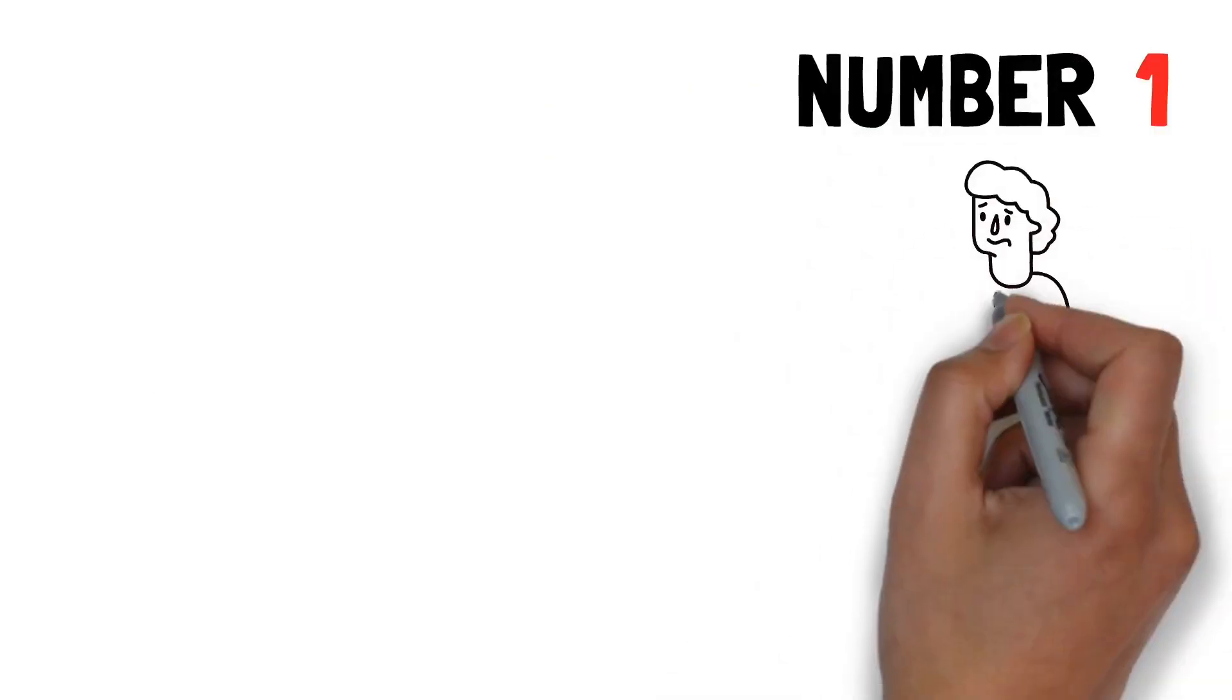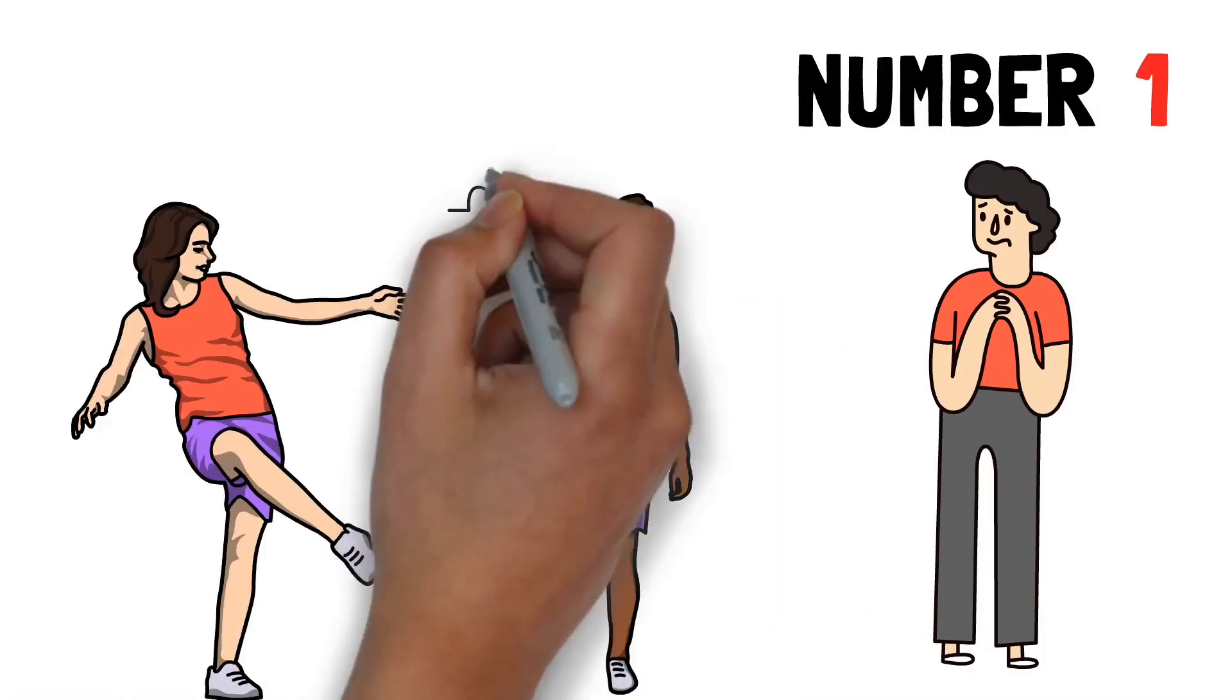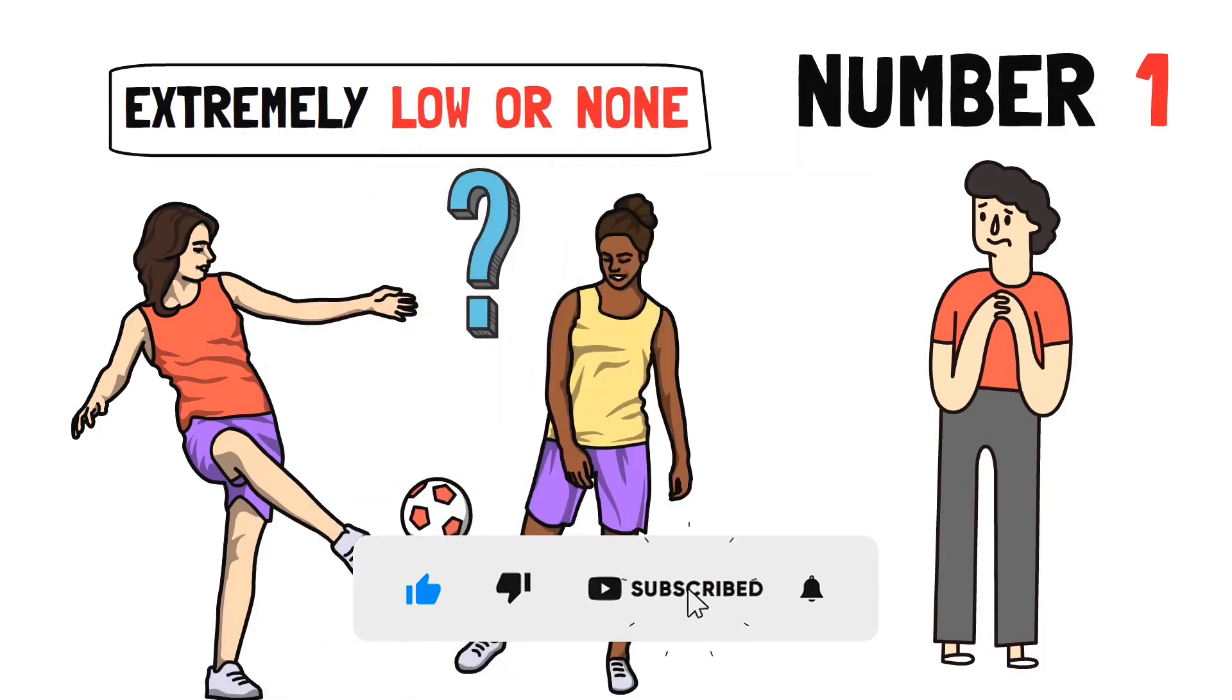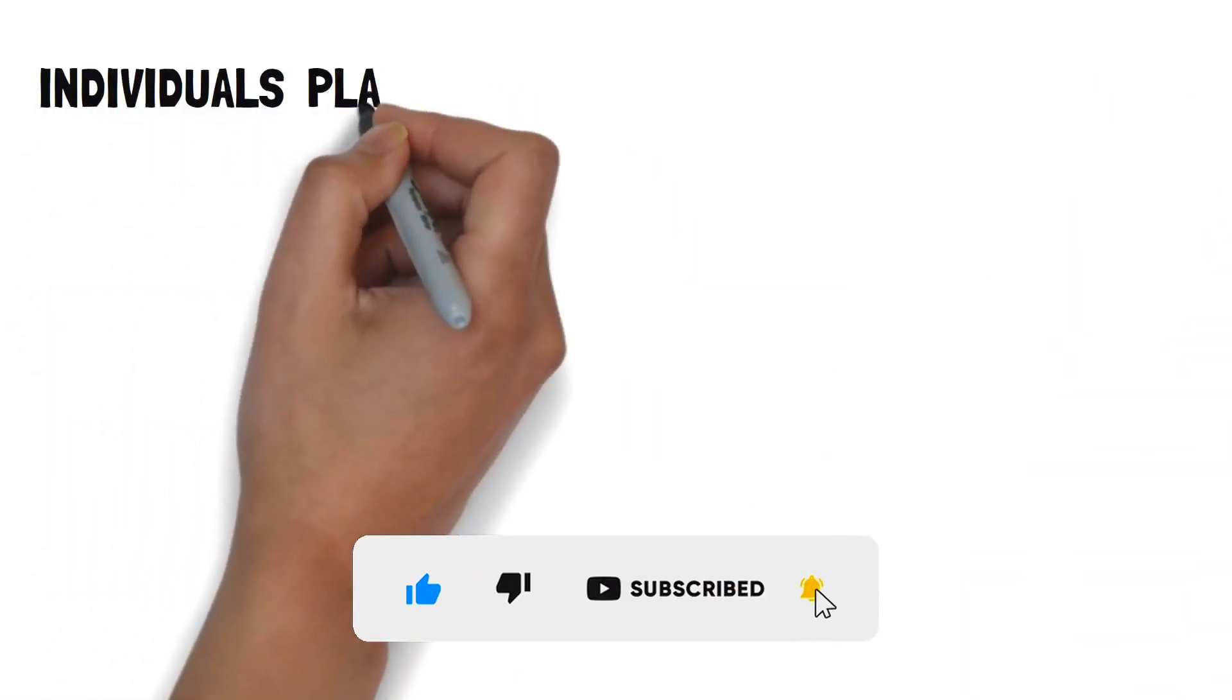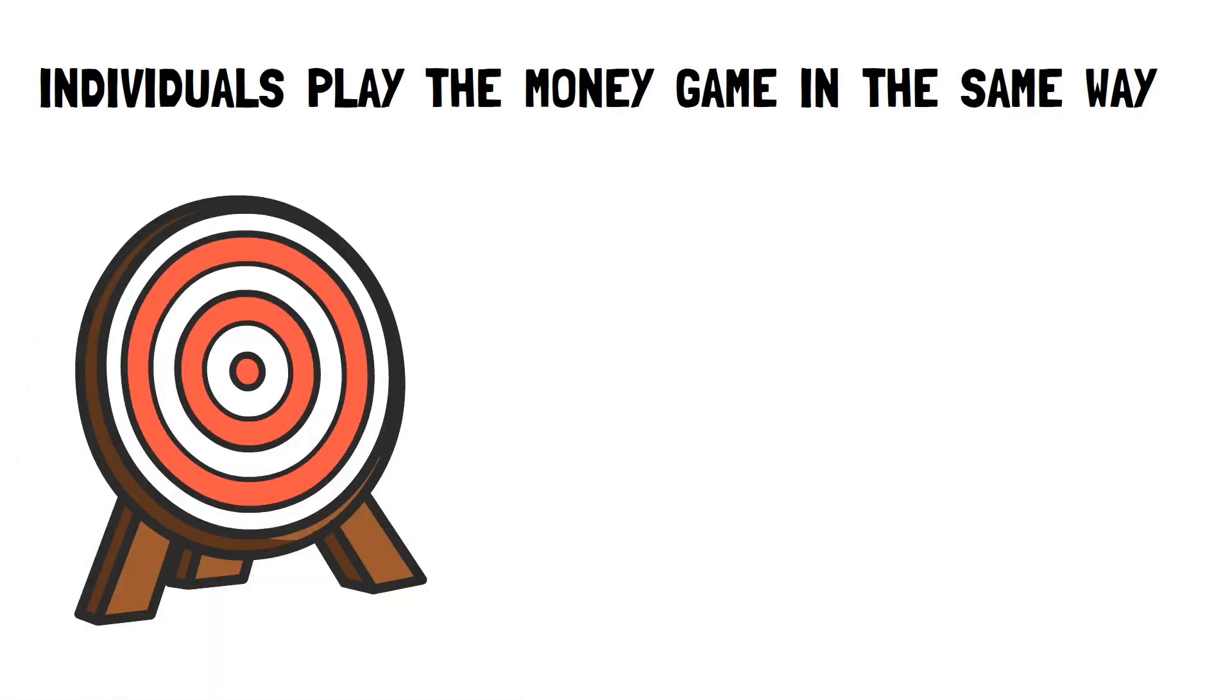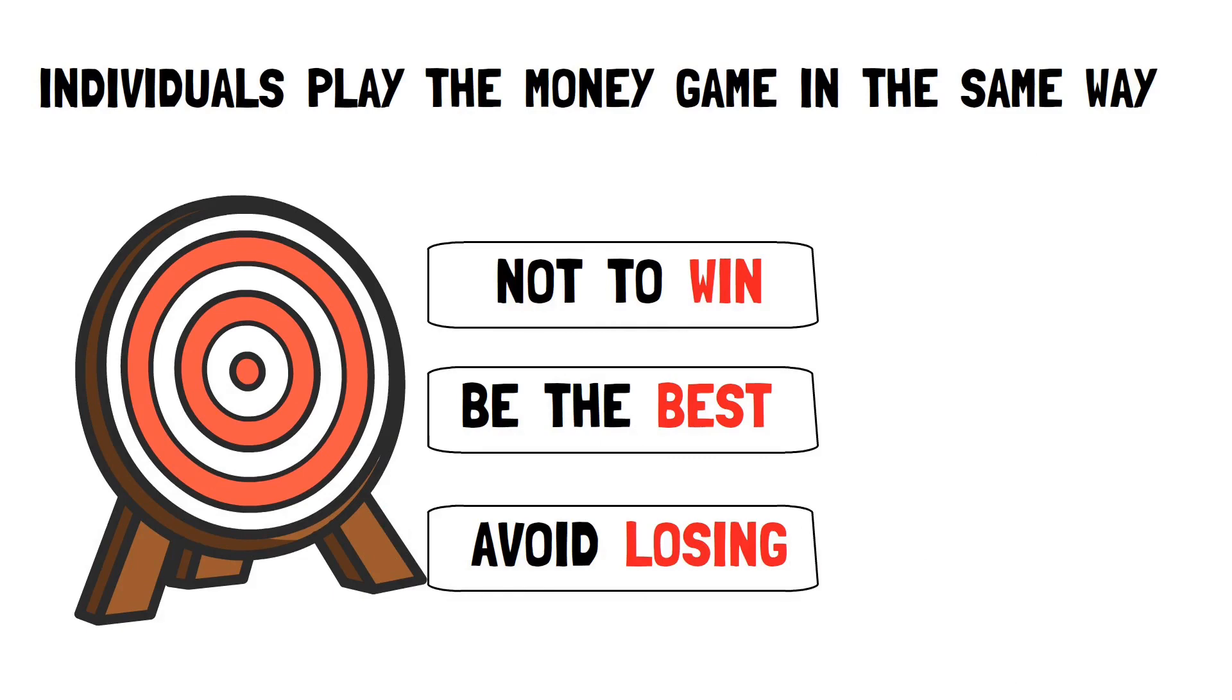Number 1. Poor people play defense. If you were to play any game strictly on defense what are the chances of you winning that game? Extremely low or none, right? And yet most individuals play the money game in the same way. Their key goal is not to win or to be the best but rather to avoid losing.